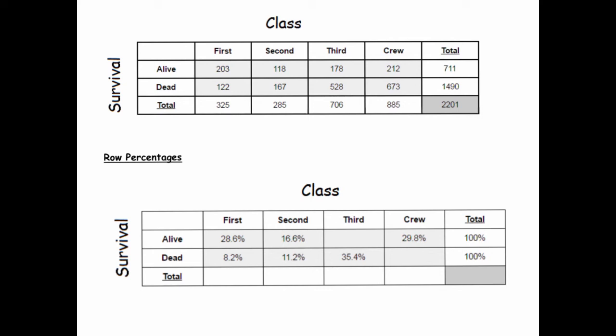We may wonder whether your chances of surviving the Titanic depended on your ticket class. One way of doing this is to think of the passengers on the Titanic as being divided into two groups: people who survived and those who died, and then look at the distribution of class within each of those two groups and make some comparisons.